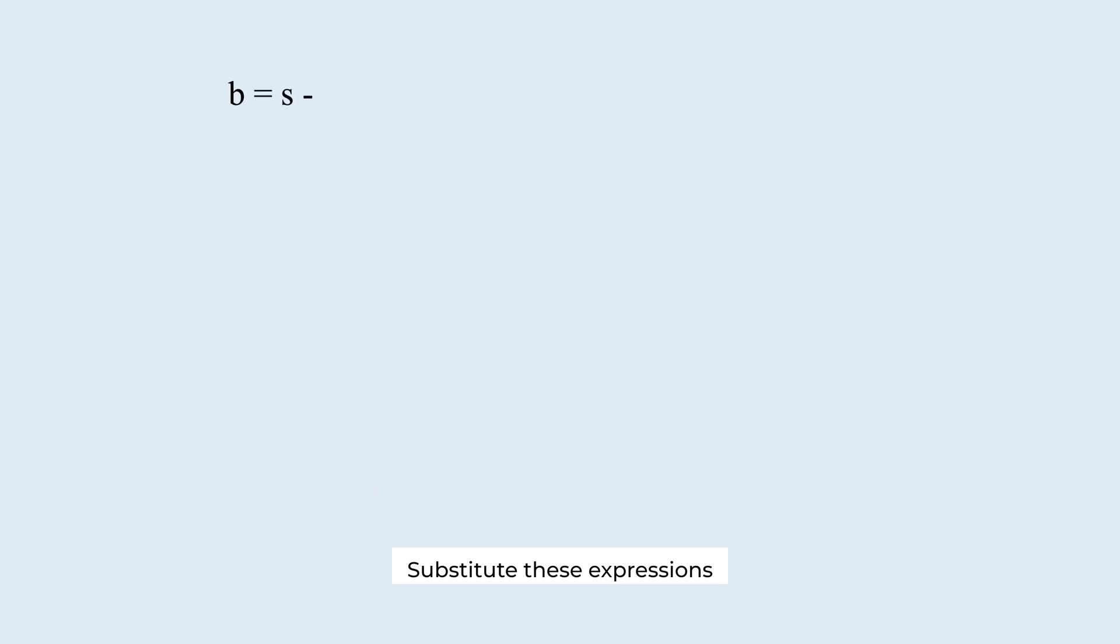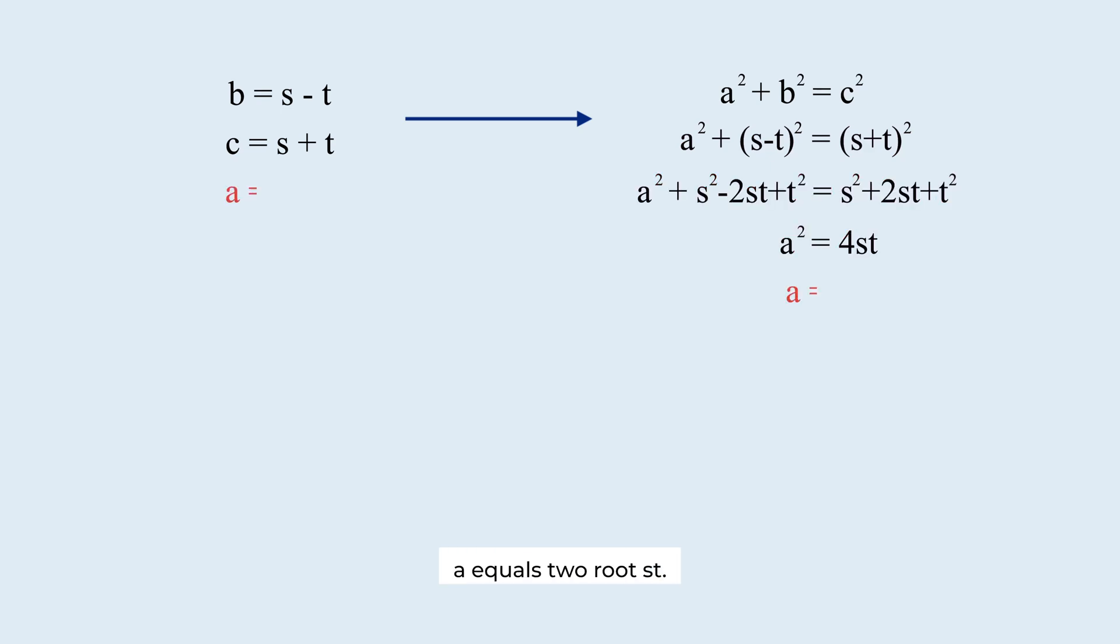We just need to express a using s and t. Substitute these expressions for b and c into the Pythagorean theorem. Expand and simplify. We derive a equals 2 root st. Now, a, b, and c are all expressed in terms of s and t.